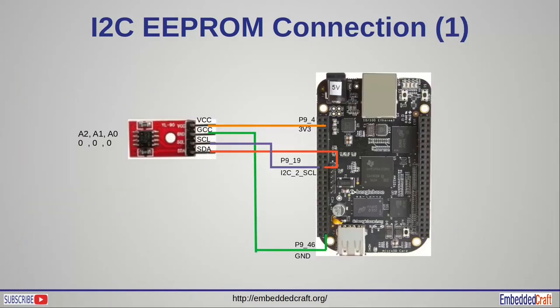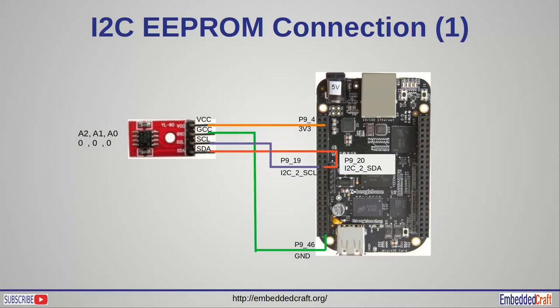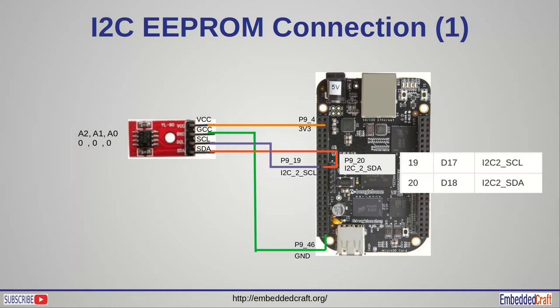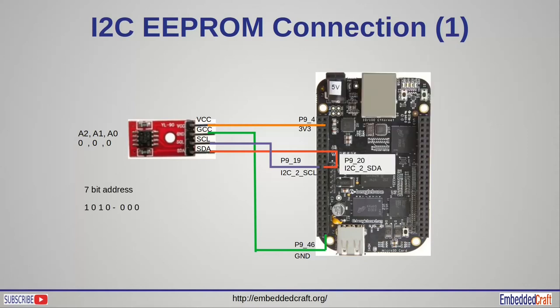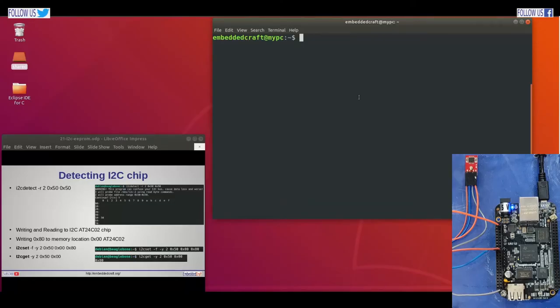Let us see the connection of EEPROM with the BeagleBone Black board. We are going to use I2C BUS2. The I2C SCL line is at port 9, pin 19, and the I2C SDA line is at port 9, pin 20. VCC goes to 3.3V — port 9, pins 3 and 4 have 3.3V, and VCC is wired to pin 4. Address lines A2, A1, and A0 as per our I2C module document are grounded. That's why the 7-bit address will be 1010 000. We are now ready to work on our board.